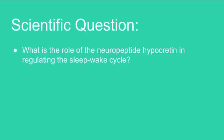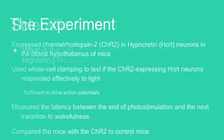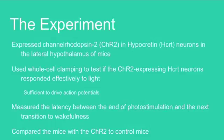The scientific question that this paper examined is: what is the role of the neuropeptide hypocretin in regulating the sleep-wake cycle? Researchers expressed channelrhodopsin-2 molecules in hypocretin-expressing neurons in the lateral hypothalamus in mice. Channelrhodopsin-2 molecules are light-sensitive receptors. To test if these neurons responded effectively to light, they used whole-cell patch clamping and found that the light was sufficient to drive action potentials.